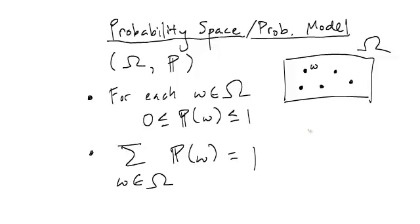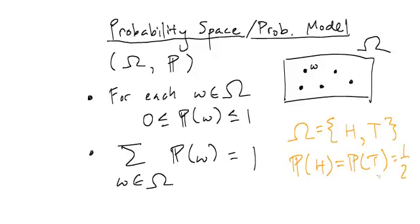Recall from our coin flipping example, we had the sample space equals, now I'll abbreviate heads with just H and tails with T. And so, of course, we had probability of heads equals probability of tails equals one half when the coin is fair.